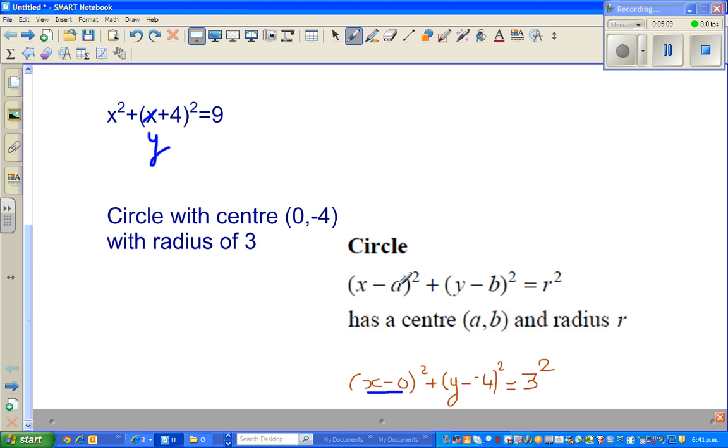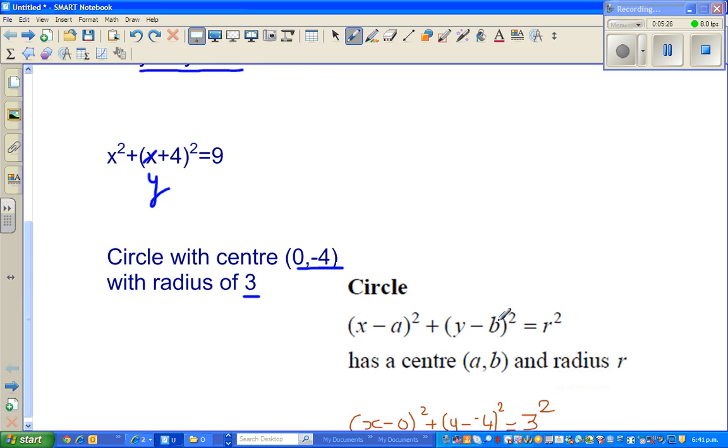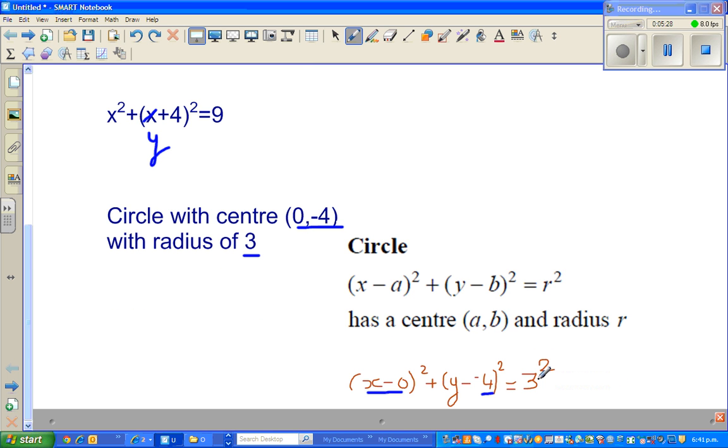So when you compare the standard form of a circle, A you can compare with 0 and B you can compare with negative 4. And that's why I've said this is an equation of a circle with center 0, negative 4 and the radius of 3. r can be compared with 3. Now, how would you graph it?